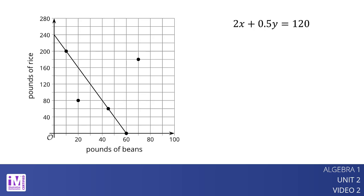What about points that are not on the line? They are not solutions because they don't satisfy the constraints, but they still have meaning in the situation. Notice that the point is not on the line. Buying 20 pounds of beans and 80 pounds of rice costs $80, which costs less than what we intend to spend.